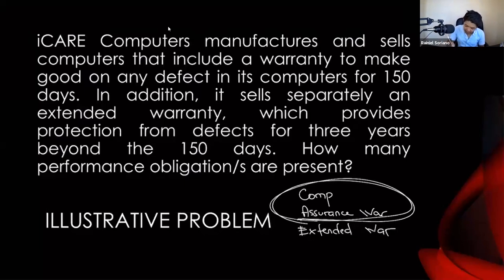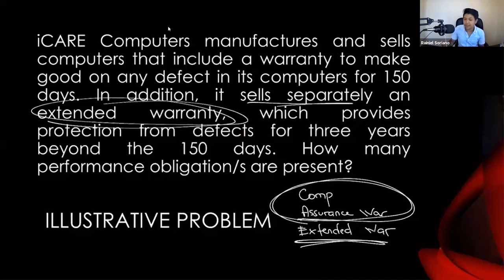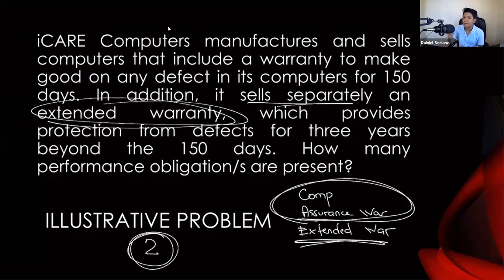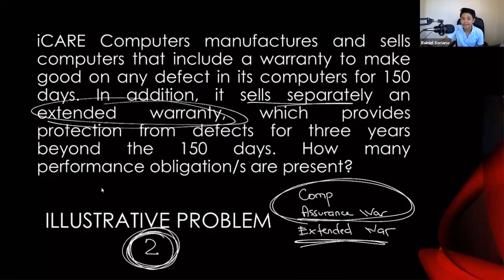Since you cannot sell one without selling the other, the computer and the assurance warranty are treated as a single performance obligation. On the other hand, since iCare sells the extended warranty separately, the extended warranty will be treated as another performance obligation. So the final answer is two performance obligations — we combine the computer and assurance warranty into one, and the extended warranty is the second.